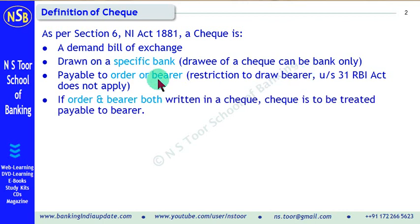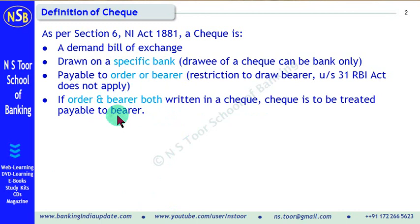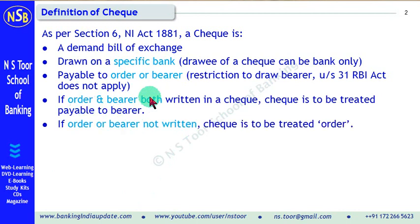In a check, if both the words are written — 'order' is written and 'bearer' is also written — in that situation the check will be treated as payable to bearer. So if neither word is written — 'order' is not written and 'bearer' is also not written — in that case the check will be treated as payable to order.